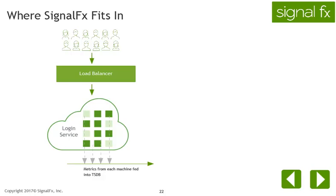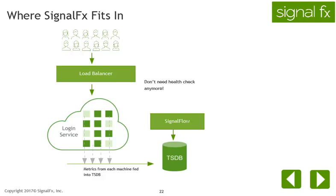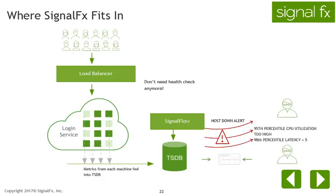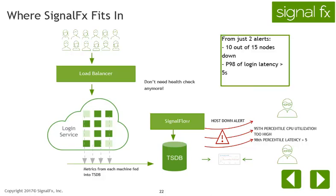That's where SignalFX comes in. SignalFX solves this problem very well by aggregating the data and alerting on it on a timely basis. The SignalFX architecture allows you to do the analytics in a streaming format and send alerts. Everything is stored in the TSDB, allowing you to analyze your data further. You also don't need Nagios anymore, as SignalFX can tell when the machine is not sending data in. SignalFX can fire a host down alert in addition to an alert that says the 98th percentile of login latency is more than 5 seconds. The combination of the two tells you that 10 out of your 15 nodes are down and the 98th percentile of login latency is greater than 5 seconds — you can conclude there is a problem from just two alerts.